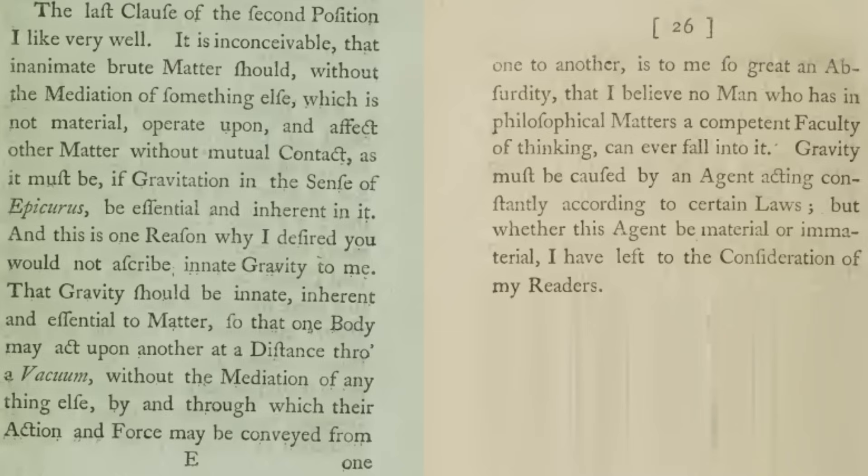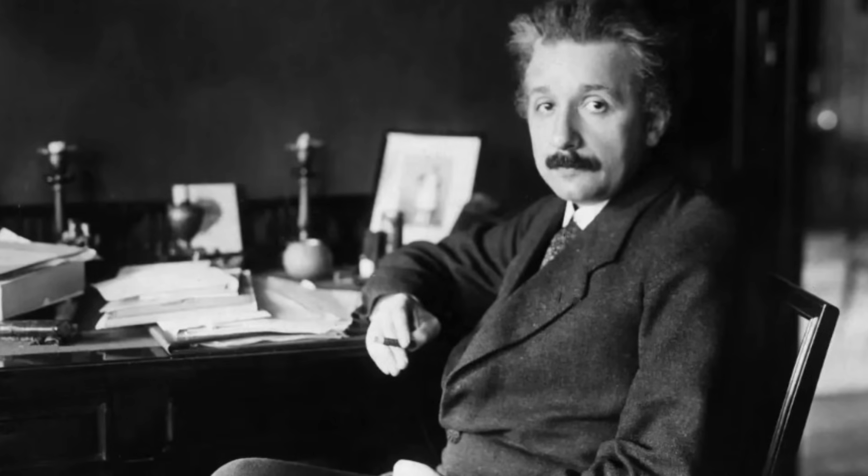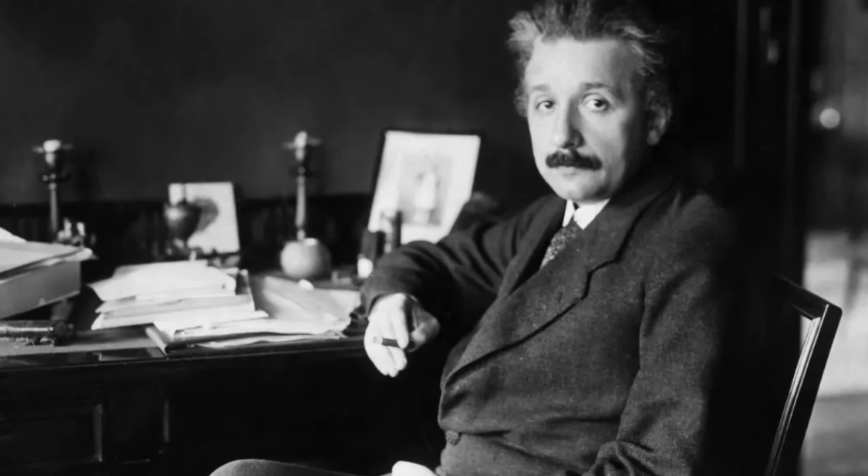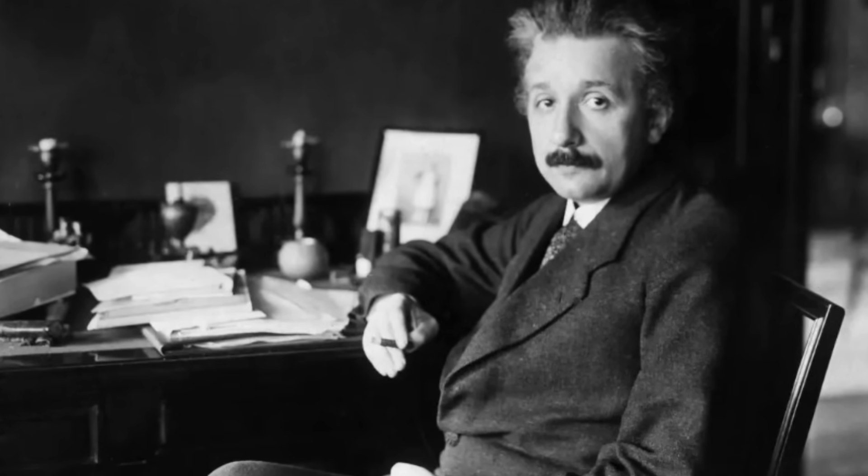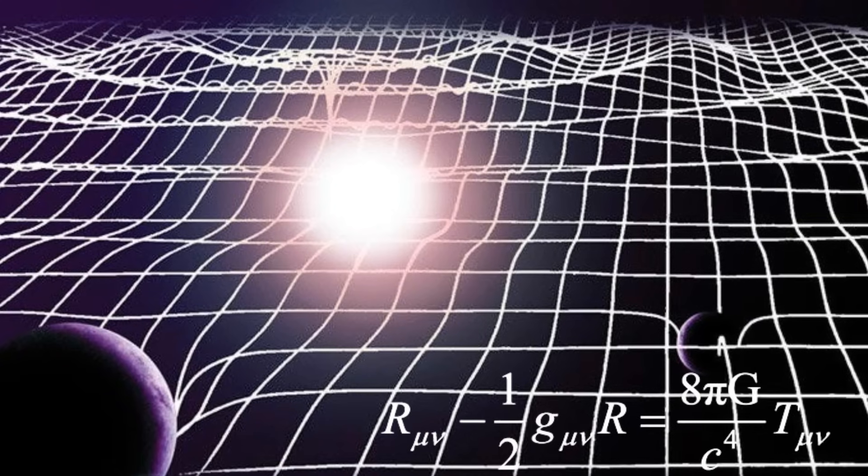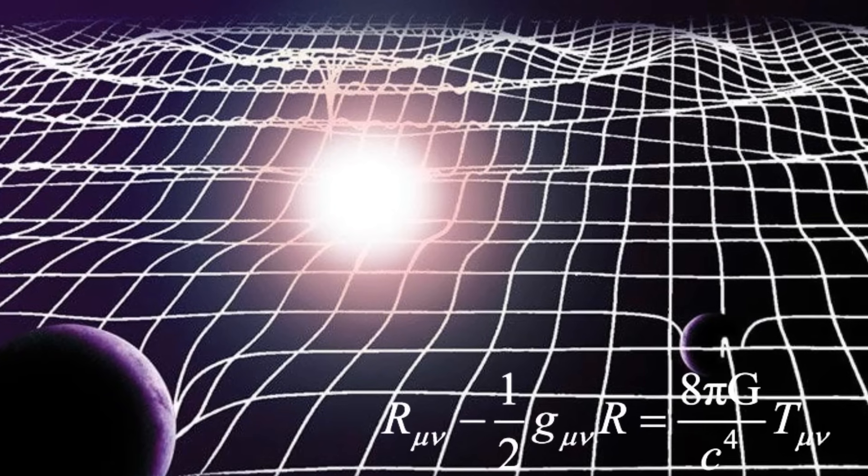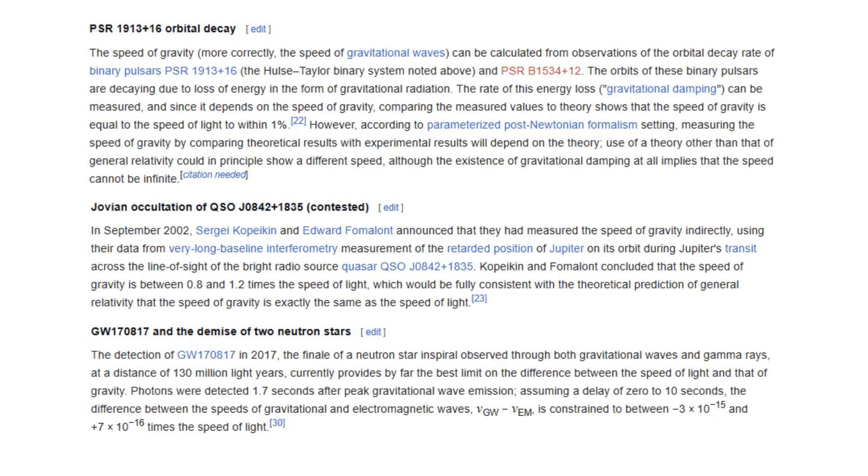The problem with gravitational action at a distance was solved by Einstein's general relativity, in which gravity is propagated through space-time curvature, and it is now proved observationally that gravity travels at the speed of light.